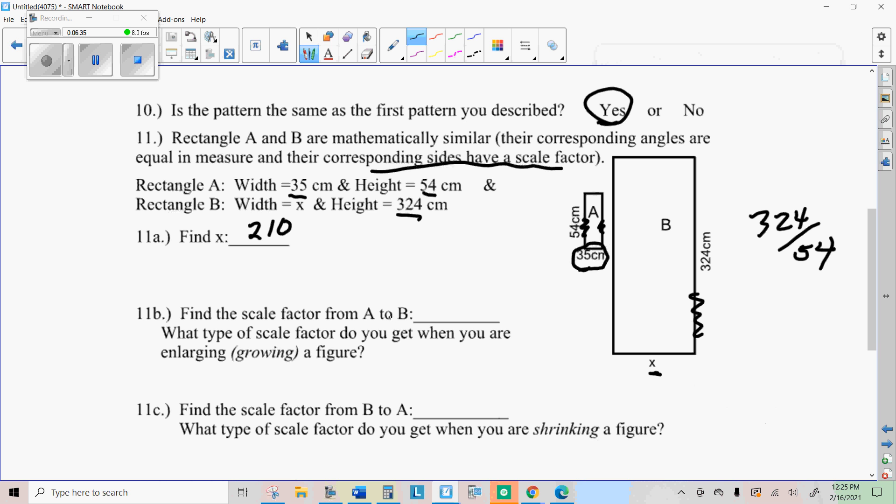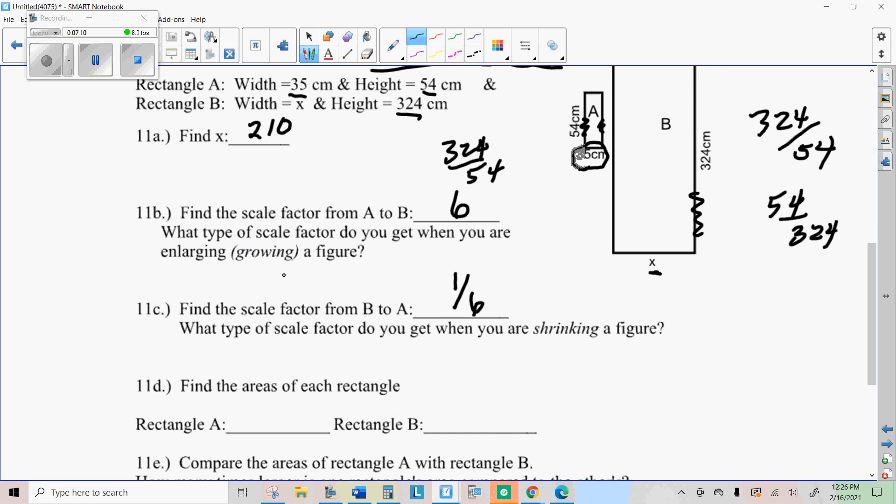So the scale factor from A to B. Now, remember, we're going from a small to a big one, so it has to be more than one. So we're going to divide 324 by 54, which we already did. And we found out that that was six. If we go from B to A, then we would do 54 divided by 324 and simplify that. But if we know the scale factor is six going one way, then going the other way, it's just the reciprocal of that, which is one sixth. So you get a scale factor greater than one when you're growing and less than one when you're shrinking.